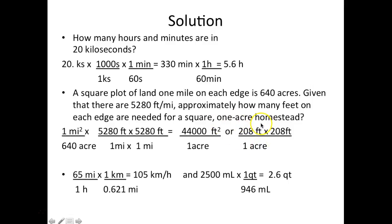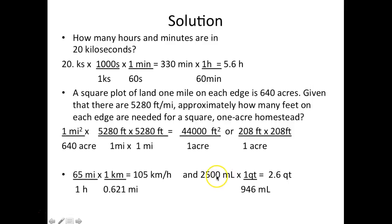Converting 65 miles per hour into kilometers per hour: start with 65 miles per hour, then use the conversion factor that 0.621 miles equals one kilometer so the miles cancel, giving the answer in kilometers per hour. For milliliters to quarts, there are 946 mL in a quart, so the mL cancel. With two significant figures, the answer is 2.6 quarts.